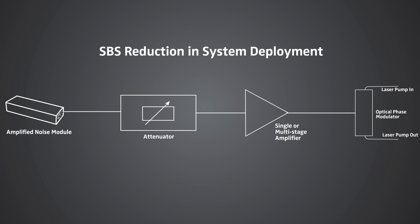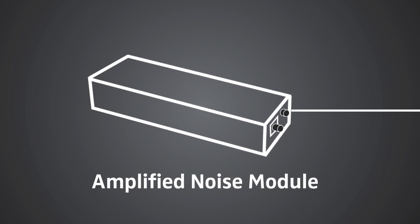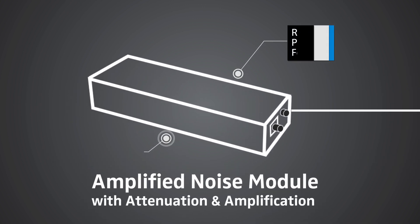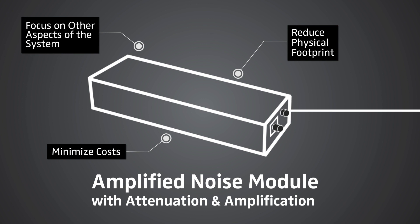Depending on the application, the laser weapon's RF attenuation and amplification stages may need to be built into the noise source. This can be useful for several reasons. For instance, it can reduce the physical footprint, minimize costs, and enable designers to focus on other aspects of the system. The NC-1000 series is one such noise source that offers this type of customization.